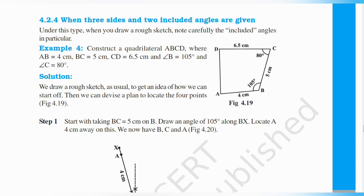In exercise 4.4, we will learn when 3 sides and 2 included angles are given. So when 3 sides and 2 included angles are given, we can construct the quadrilateral. Let us see how to construct it with an example problem.